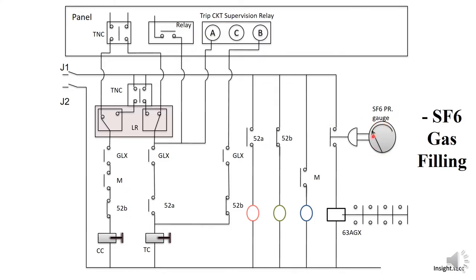When the SF6 gauge goes low, the contact will close. With this contact, here is a contactor which is 63AGX. This contact is between the breaker and the tripping of the breaker.